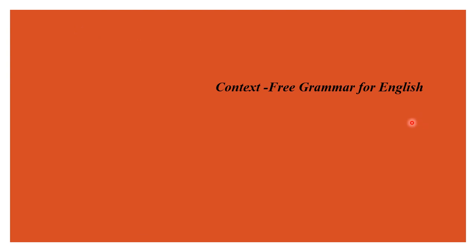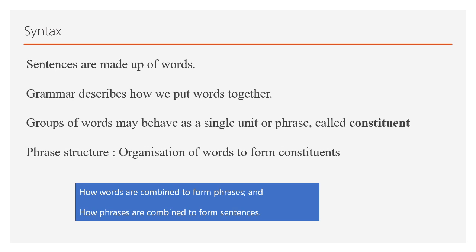Let's have a recap of the grammars we have learned in our school days. While we are learning a new language, we start with learning phonics, followed by learning words. And then we have to understand how a sentence can be framed by combining these words. Sentences are made up of words. And this grammar represents how we can put together these words. And this group of words is called phrase or constituent. Phrase structure means organization of words to form constituents.